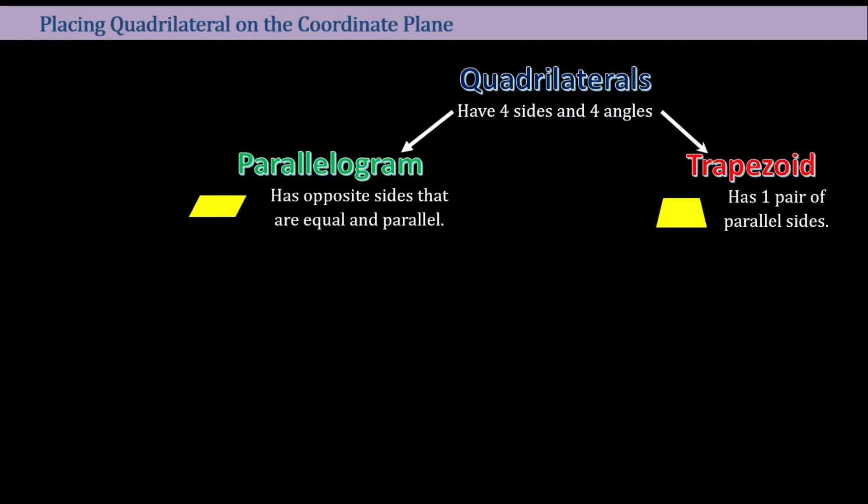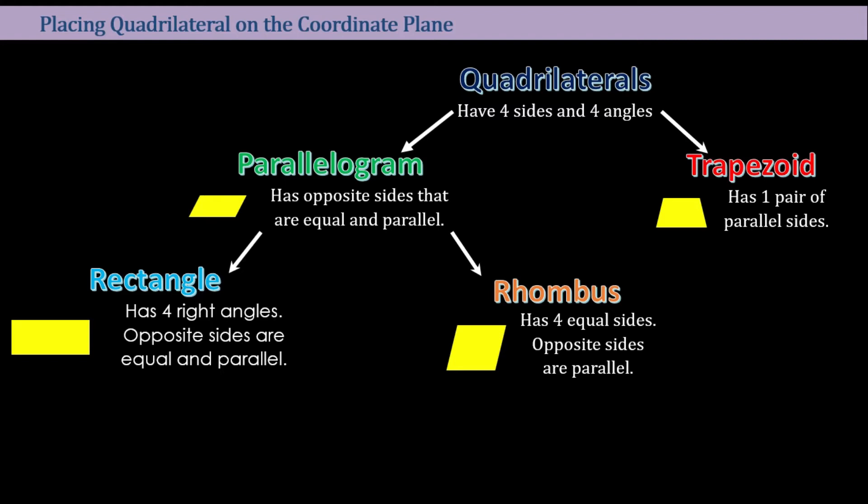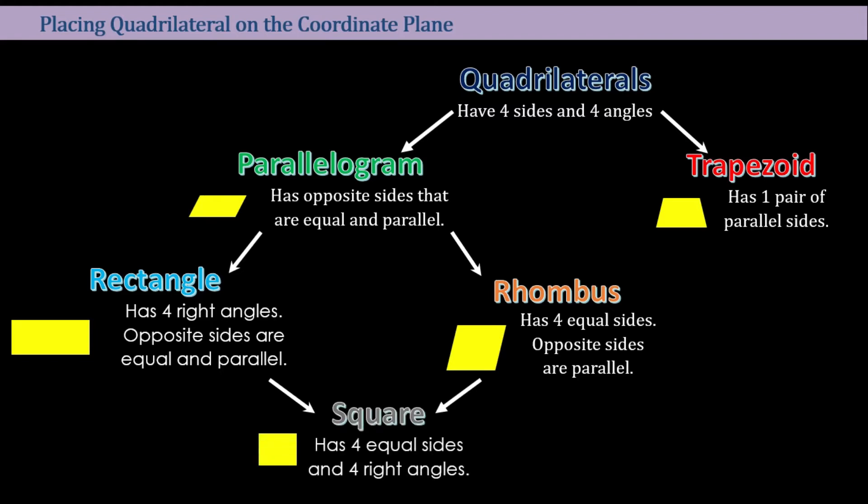When we talk of a parallelogram, it can be divided into two types: the rectangle and the rhombus. A rectangle has four right angles, and a rhombus has four equal sides. If we combine the properties of a rectangle and a rhombus — a figure that has four right angles and four equal sides — we call that a square. There are other quadrilaterals like a kite, but we will not be using those here. So let's start first with the square.